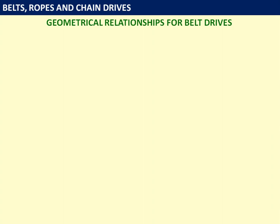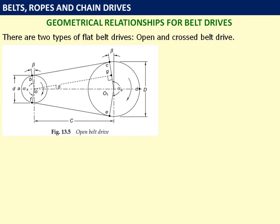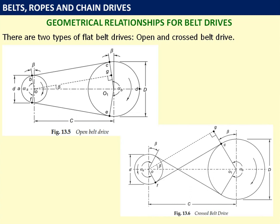Geometric relationships for belt drives. There are 2 types of flat belt drives: open and cross belt drive. In case of open belt drive, the driven pulley rotates in the same direction as the driver pulley. So here, the driving pulley is rotating clockwise and the driven pulley is also rotating clockwise. Whereas in case of cross belt drive, the driving and driven pulley rotate in opposite directions.